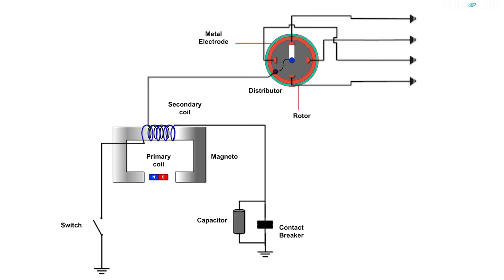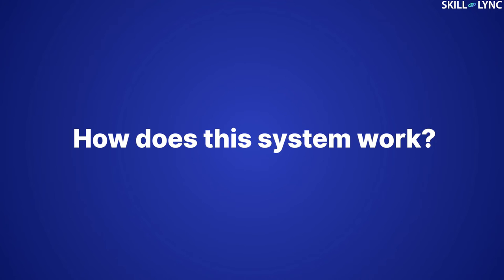The secondary winding is connected to the rotor of the distributor and the metallic electrodes in the distributors are connected to the spark plug. Now, how does this system work?